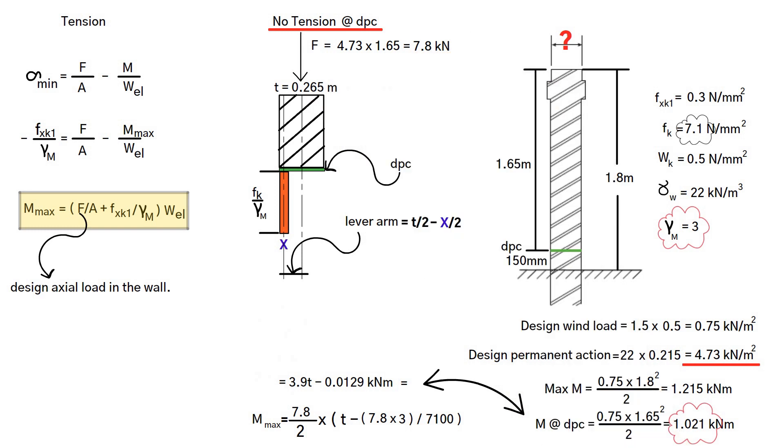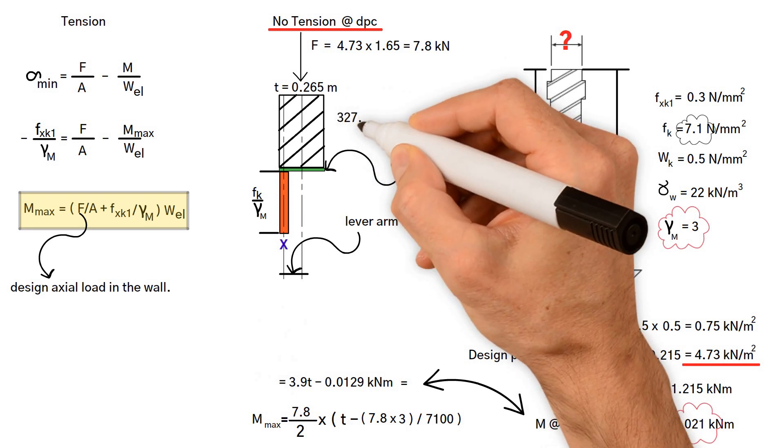Consequently, the closest standard brick dimension above this thickness is needed. This is 327.5 millimeters.